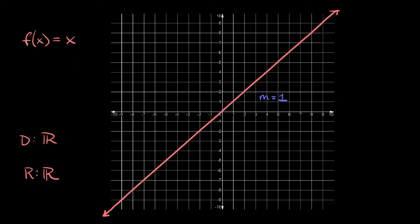The next function is f of x is equal to x, which is a linear function. This linear function runs through the origin at zero zero and it has a slope of one. The domain and range are both the same — they're both all real numbers.